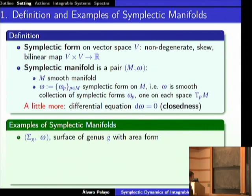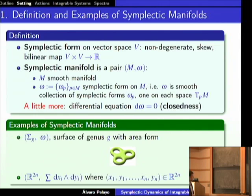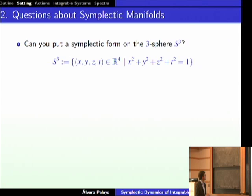A non-compact example which is very important is R^{2n} with the symplectic form obtained by taking the wedge product dx_1 ∧ dy_1 + dx_2 ∧ dy_2 + …, where x_1 through x_n are coordinates in R^{2n}. One can ask: how many symplectic manifolds are there, and what conditions does a symplectic form impose? For example, can you put a symplectic form on the three-sphere, the Klein bottle, or the four-sphere? The three-sphere is not symplectic because you cannot put a non-degenerate form on it.